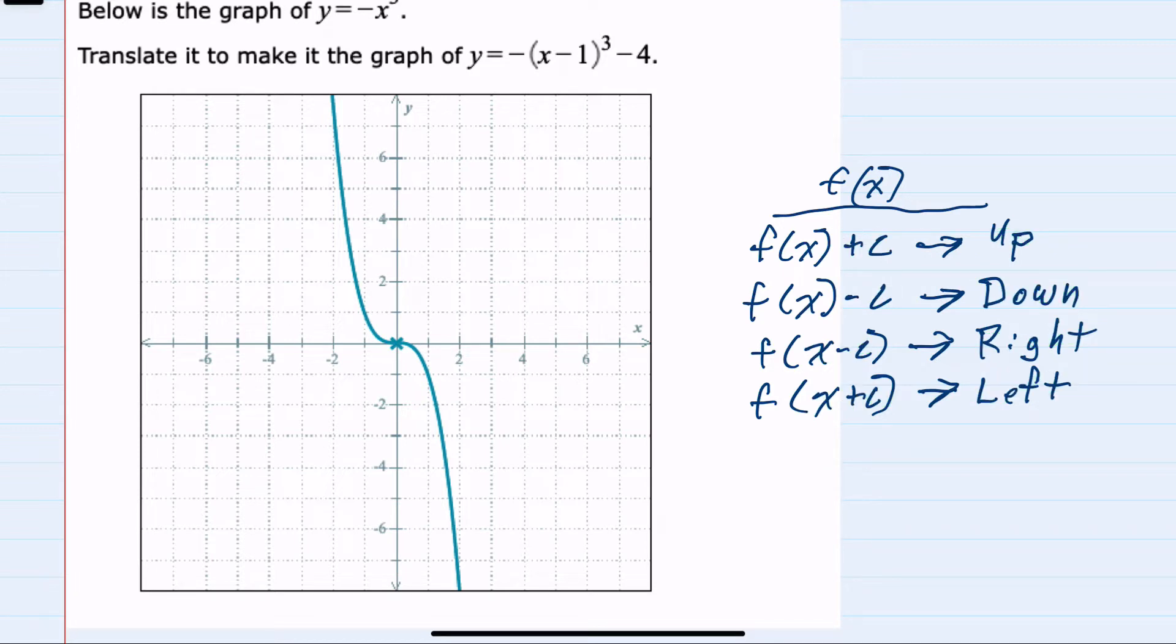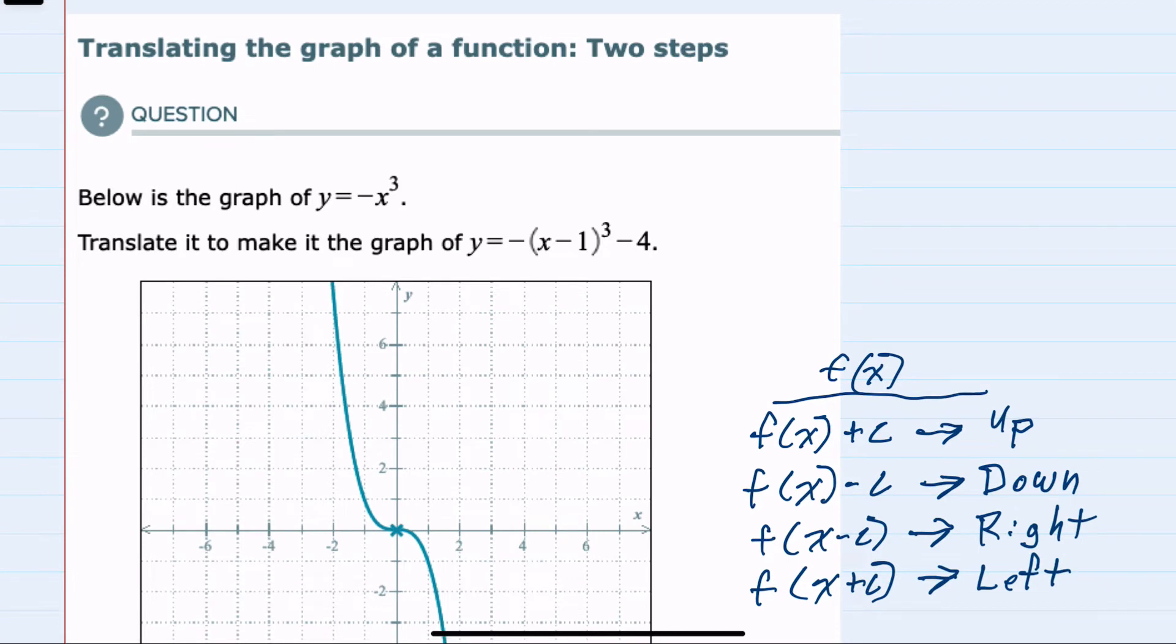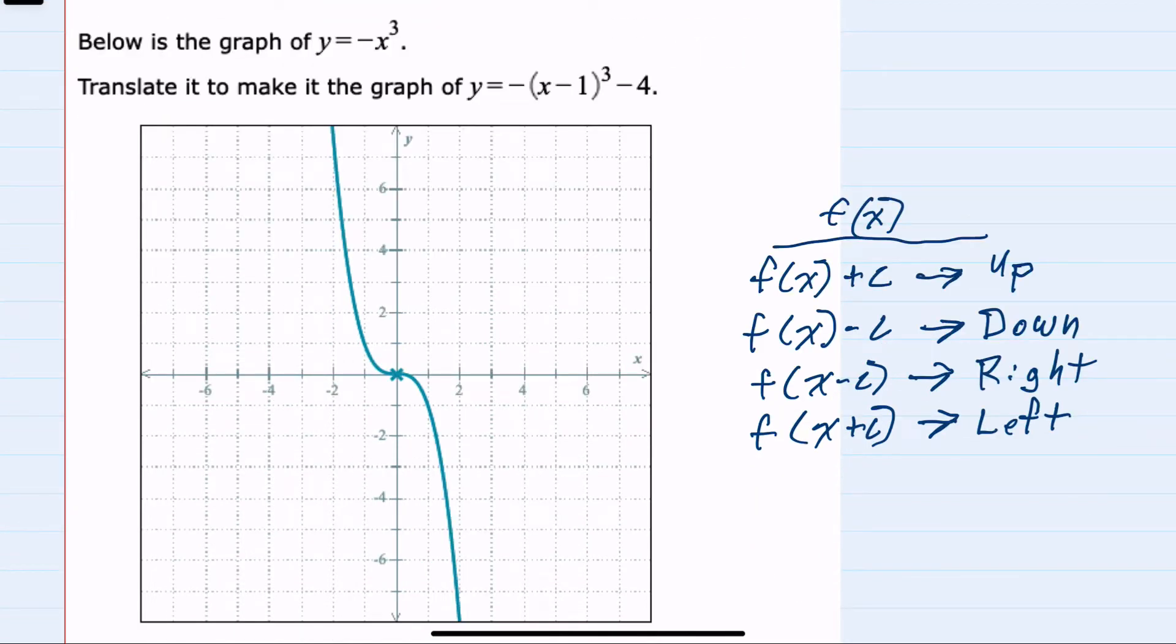In the example we have here, from the name, we can tell that this is two steps. So we have both a minus 4 that's just added to the end of the function, and we know that that will shift our function down 4 units.